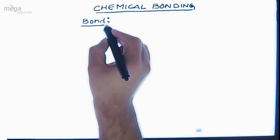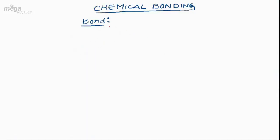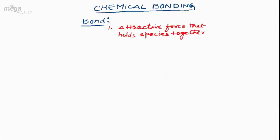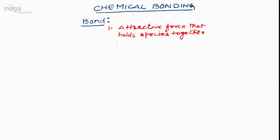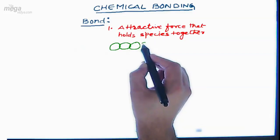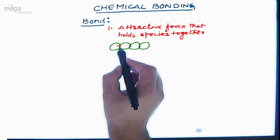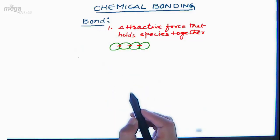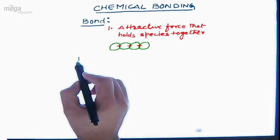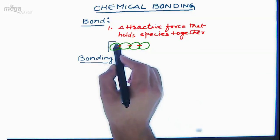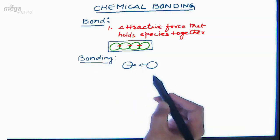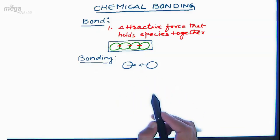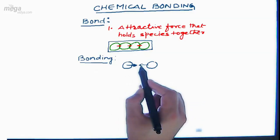Before starting the chapter, let's understand what the word 'bond' means. A bond is an attractive force which holds species together. For example, in solid substances, the constituent particles are closely packed to each other. This close packing represents that every atom is held to each other through a force, and that force is called a bond. So a bond is a force which holds or bonds species together.